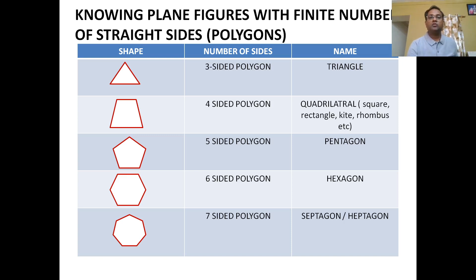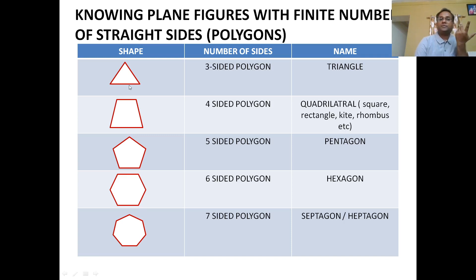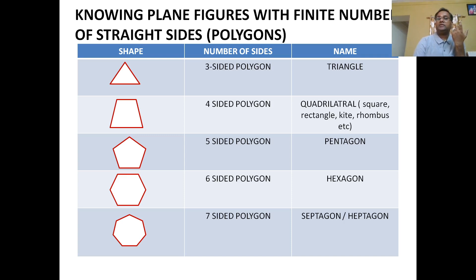Now let us know more about convex shapes — plane figures with a finite number of straight lines, which we also call polygons or convex polygons. Let us count how many sides these shapes have. This shape is a triangle — it has one, two, and three sides. A triangle is also called a three-sided polygon. Polygon means a plane figure with a finite, meaning countable, number of straight sides. A triangle is a polygon with three sides.